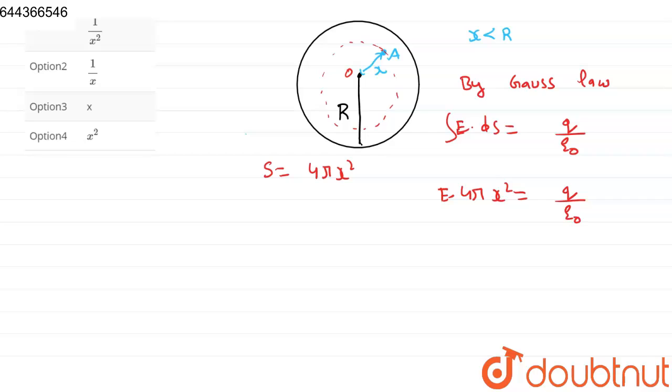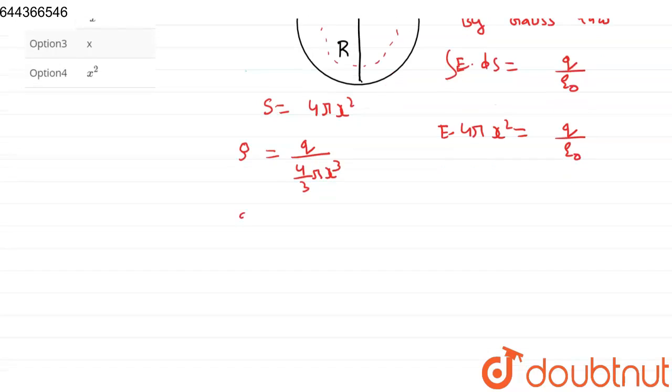Now, what is q? We know that it is a volume charge distribution, so rho equals q over 4/3 π x cubed. So q equals rho times 4/3 π x cubed.